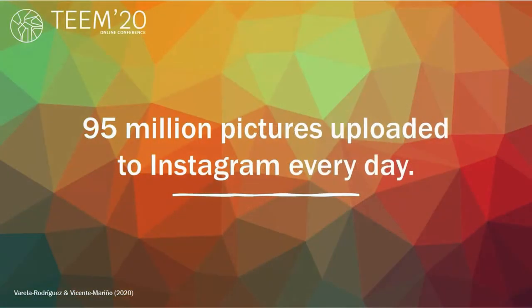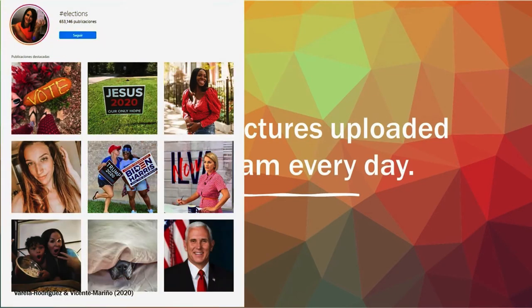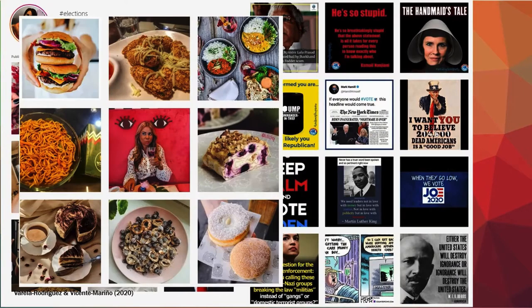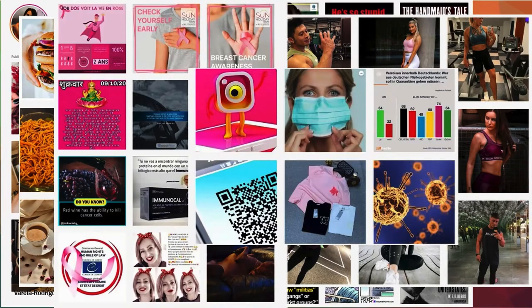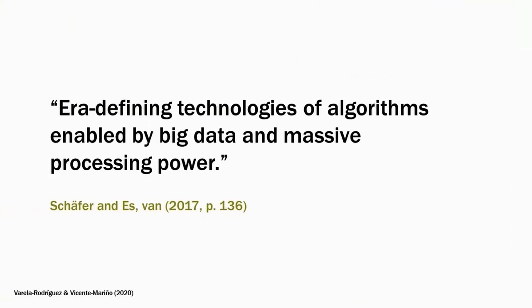There are an estimated 95 million photographs uploaded to Instagram every day. They touch on politics, memes, food, fitness, health, or the ongoing pandemic, among many others. For us social researchers, the emergence of social media and its algorithms has been characterized as era-defining.